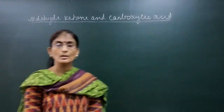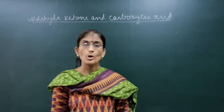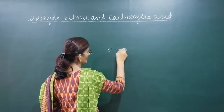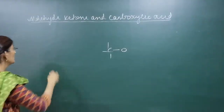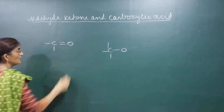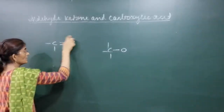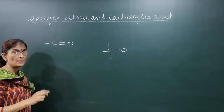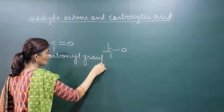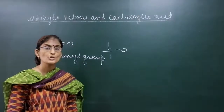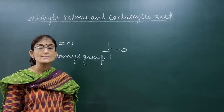Earlier in chapter 11 we had done alcohol, phenol and ether, in which there is a single bond between carbon and oxygen. Now we are studying aldehydes, ketones and carboxylic acids, in which carbon and oxygen are joined by a double bond. We know carbon has 4 valency, and 2 valency is satisfied by oxygen. This group where carbon and oxygen are joined by a double bond is known as the carbonyl group.